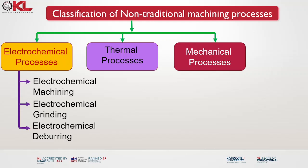Electrochemical machining finds applications in various industries including aerospace, automotive, medical, electronics and precision engineering. It is commonly used for producing complex molds, turbine blades, fuel injection nozzles, micro components and surgical implants.